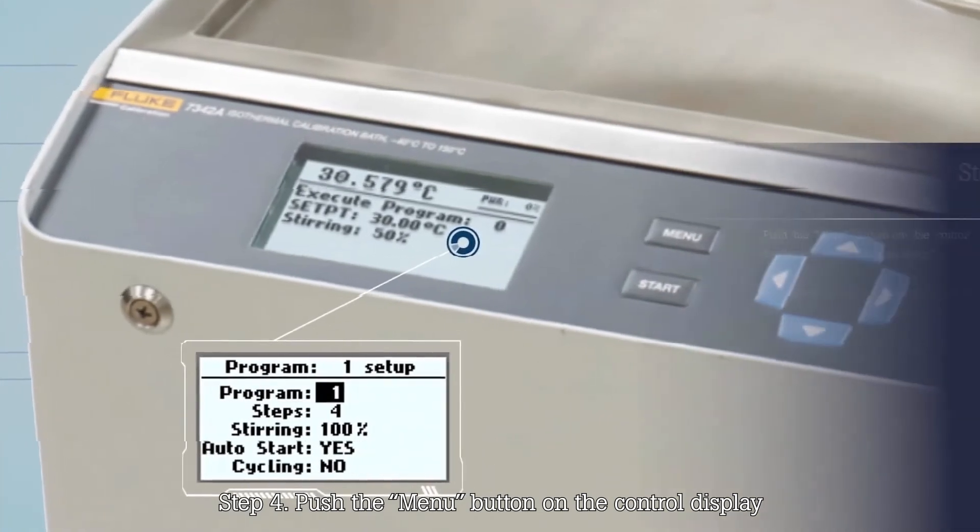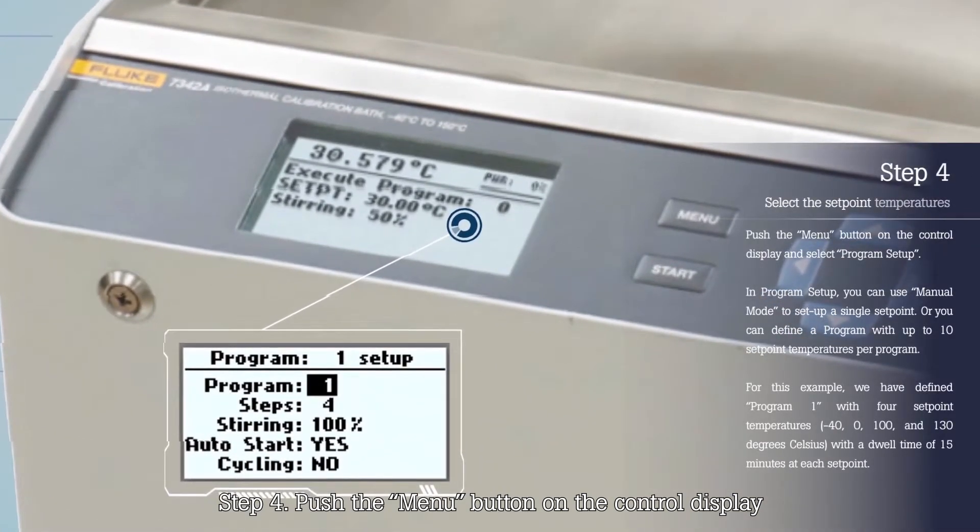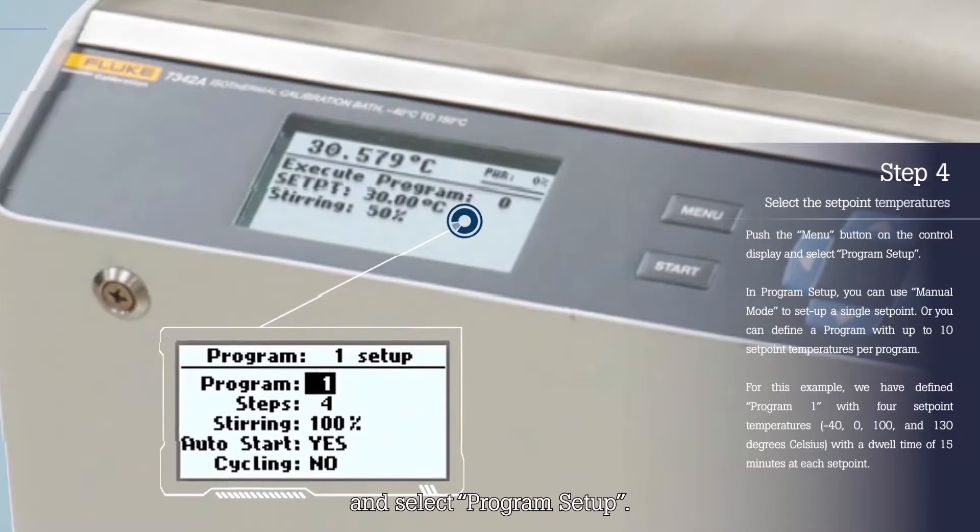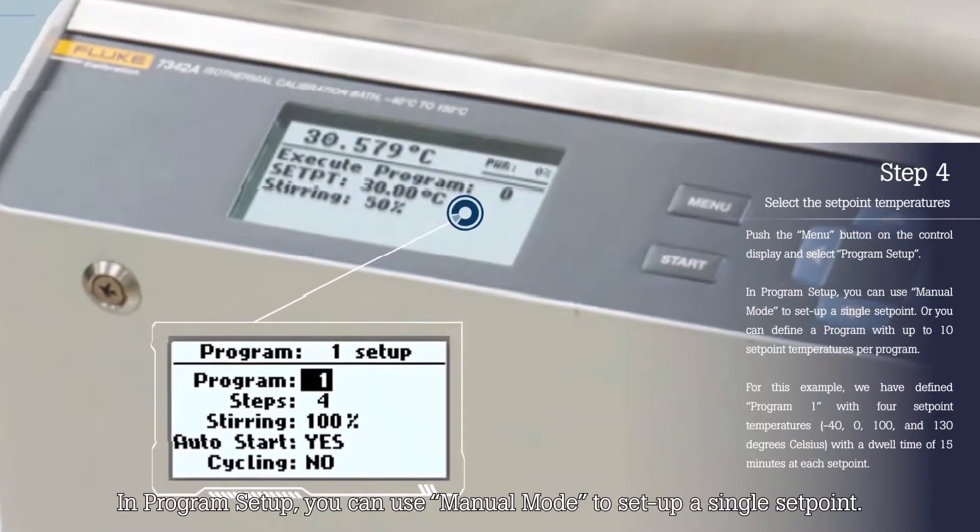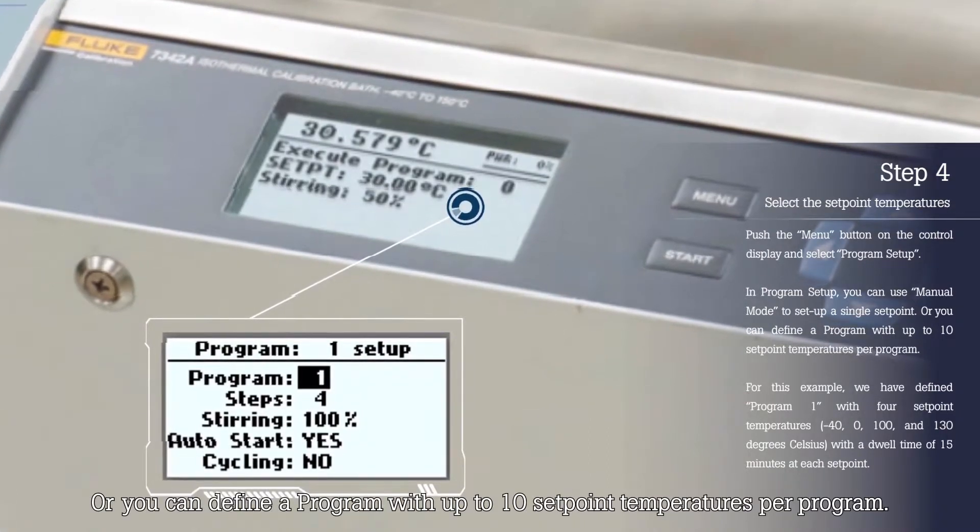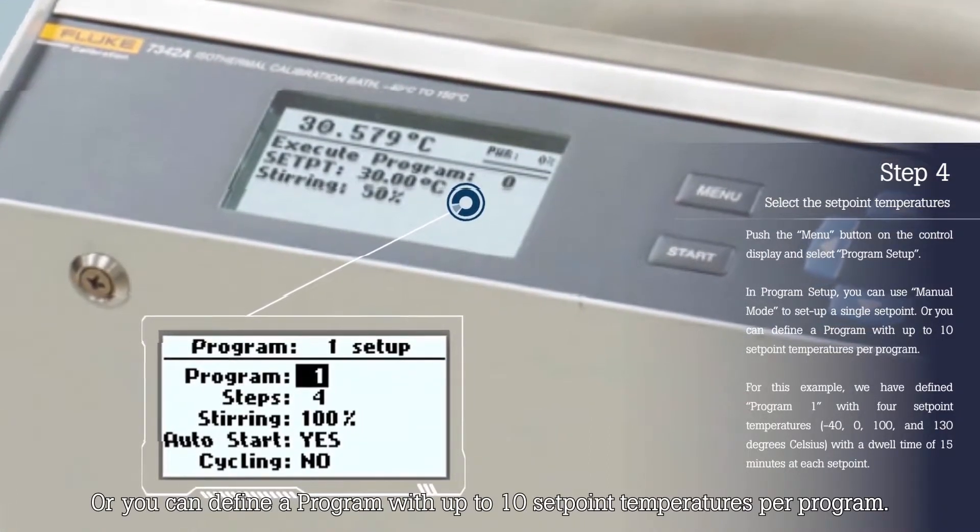Step 4. Push the menu button on the control display and select Program Setup. In Program Setup, you can use manual mode to set up a single set point, or you can define a program with up to 10 set point temperatures per program.